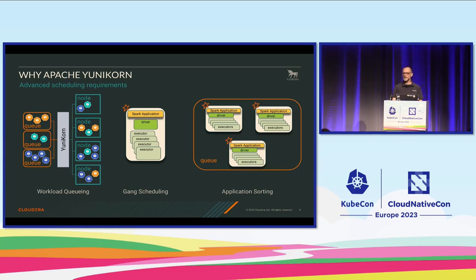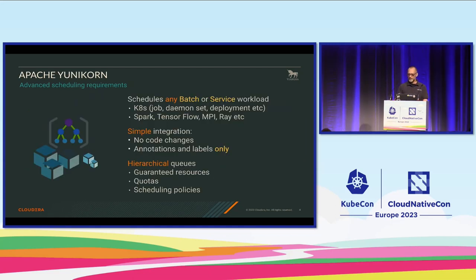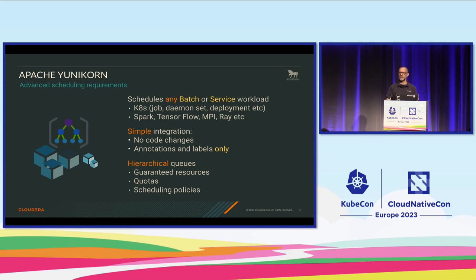These kinds of scheduling facilities are available in high-performance computing and batch processing when you come from a SLURM or YARN setup. These same things we want to do from Apache Yunikorn within Kubernetes. But Kubernetes, from its origins, was always a services-based setup. There are schedulers that give you some batch features but don't handle services, or conversely the default scheduler handles services but lacks batch scheduling capabilities.